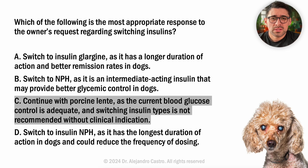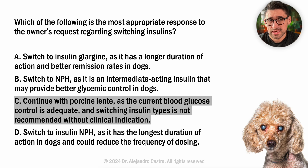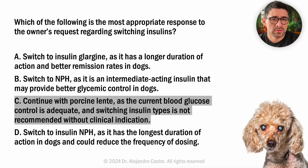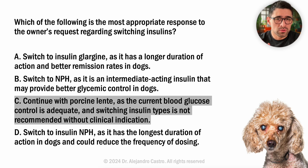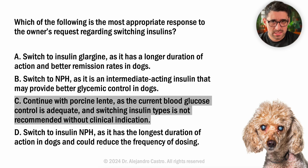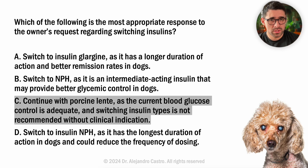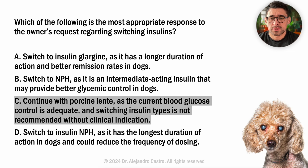Now let's talk about those other insulins the owner mentioned. Insulin glargine is a long-acting insulin preferred in cats for its steady glucose-lowering effect; it is not commonly a first-line choice in dogs. NPH is an intermediate-acting insulin used in some dogs, but doesn't offer any advantage over Lente in this case. Always keep in mind that every diabetic patient is unique and insulin selection should always be tailored to their specific needs.